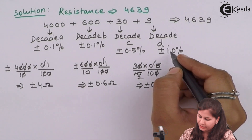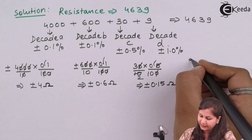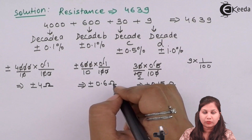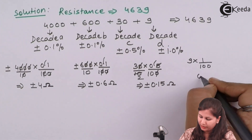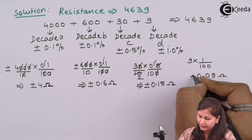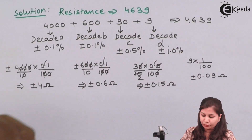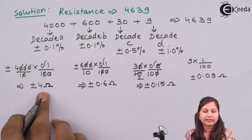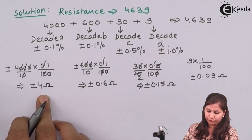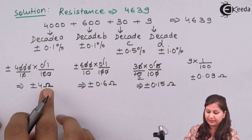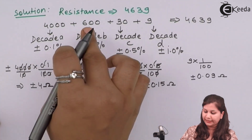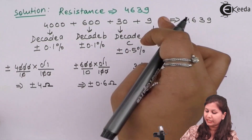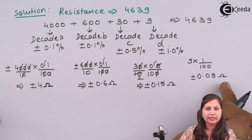For decade D, the reading is 9 and the error is ±1%, so: 9 × 1/100 = ±0.09 ohms. Summarizing the errors per decade: decade A gives ±4 ohms, decade B gives ±0.6 ohms, decade C gives ±0.15 ohms, and decade D gives ±0.09 ohms.